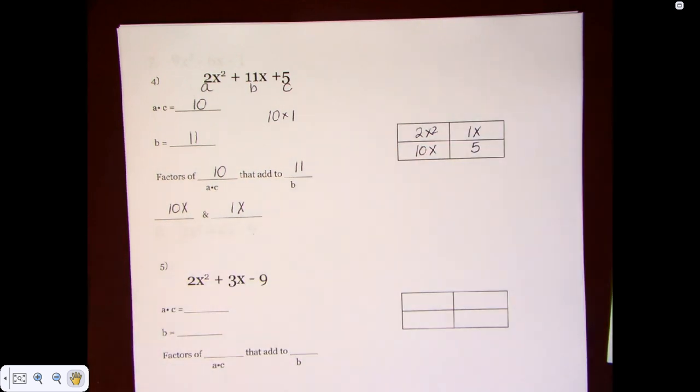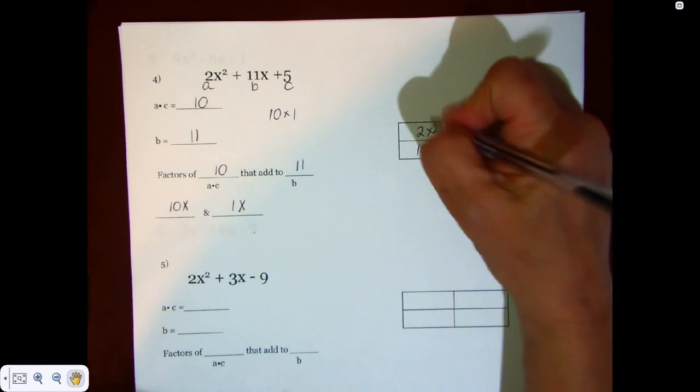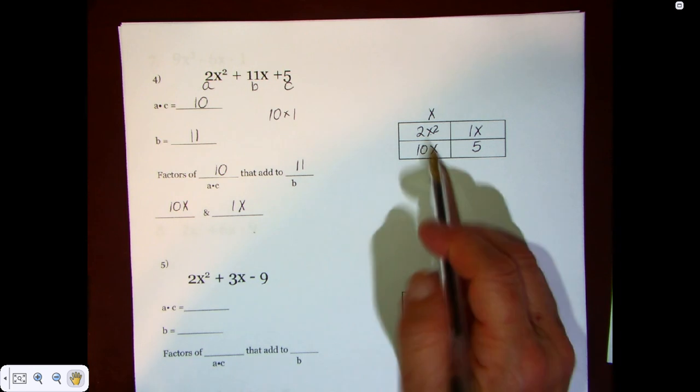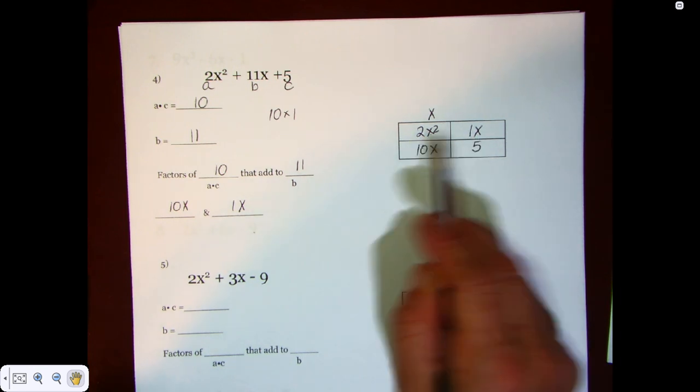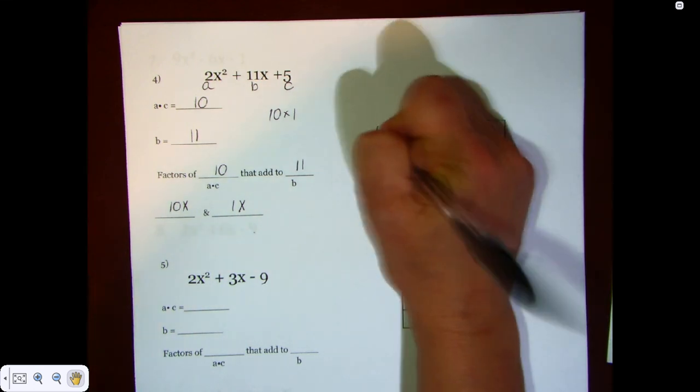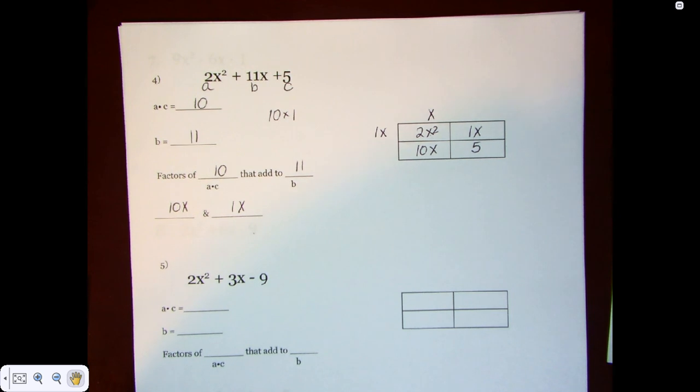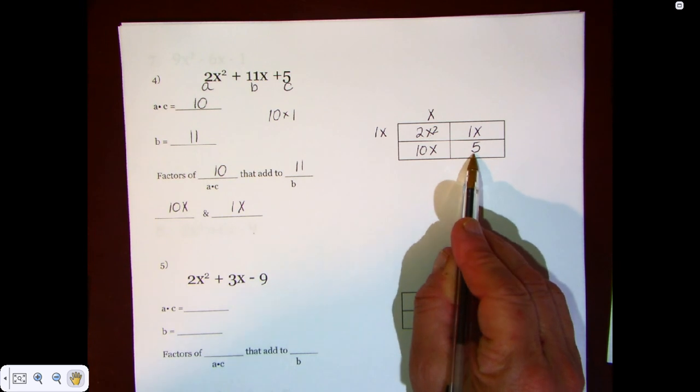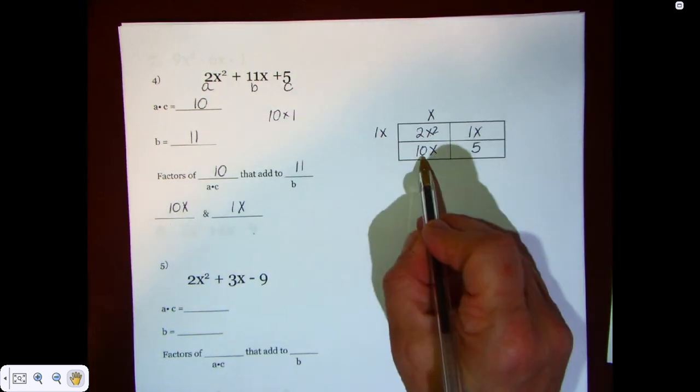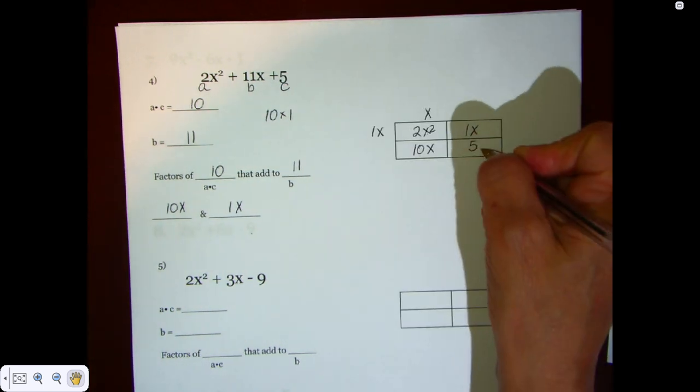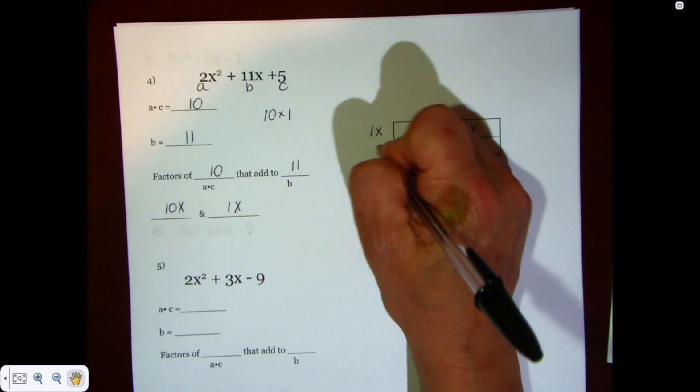Now we're going to pull out what these guys have in common. If this is X squared and this is X, we have 1X in common. What does 2 and 1 have in common? 1. We have X squared and X again, so we have 1X over here. What does 10X and 5 have in common? Of course, it's the number 5 because 10 is equal to 5 times 2, and 5 is equal to 5 times 1. So they do have the 5 as a common factor. So we're going to pull this out over here.